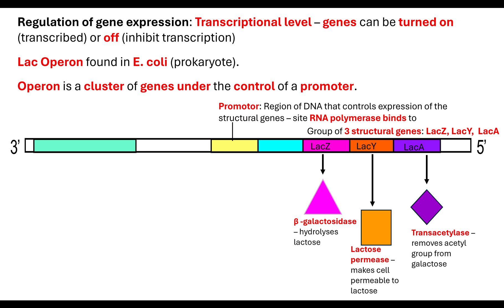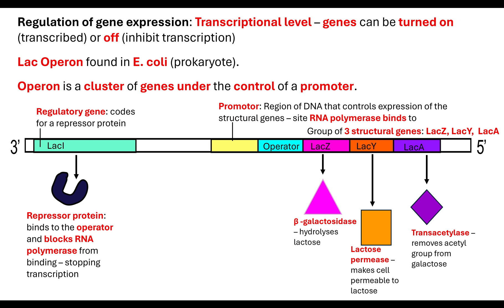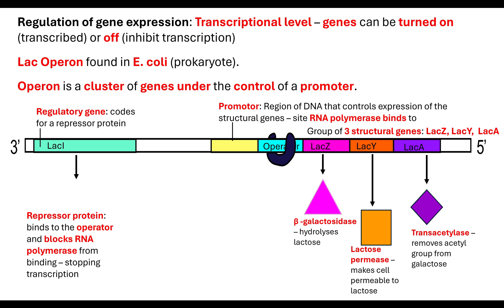Because we're talking about the regulation of gene expression, we also have what's known as a regulatory gene which is further along the DNA molecule. This regulatory gene codes for a repressor protein. That repressor protein has a very specific shape which means it will bind to the operator. When it binds to the operator, it blocks RNA polymerase from being able to bind, thereby stopping transcription of those three structural genes and regulating their expression.